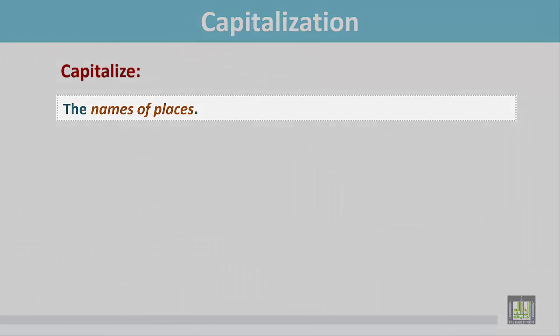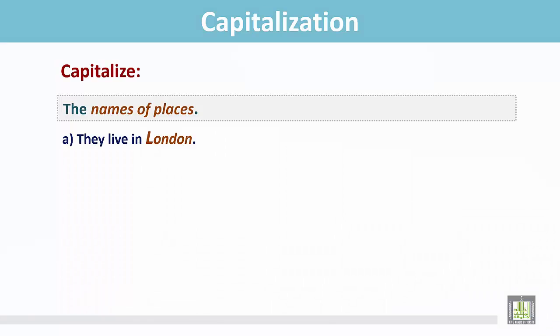Capitalize the names of places. They live in London. I live in Jidda. London is the name of a place and the first letter L is capital.